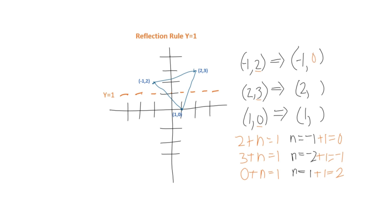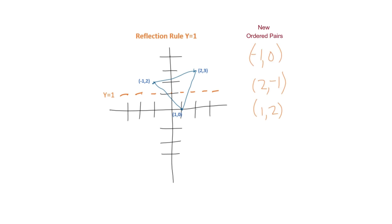We have 0 from here, negative 1 from here, and 2. These are our new values for y. This is what we're going to plot on our graph.